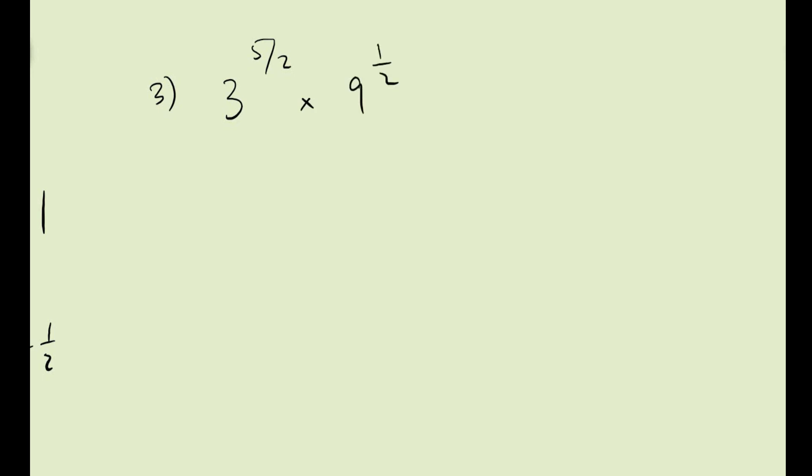And therefore you will have on the top 3 power 5 over 2 plus 1 over 3, and on the bottom 3 power 2/3 plus 1/4. And combining all this will give you 3 power 3. Now if it is a number that is quite simple to calculate, you can always leave your answer in a more simplified form, and in this case it is 27.